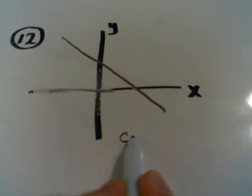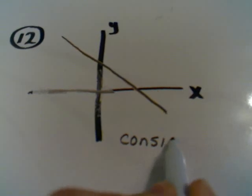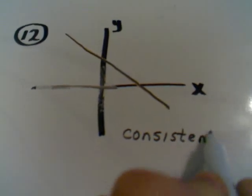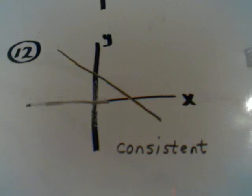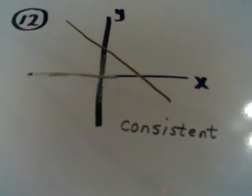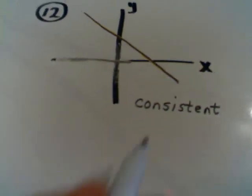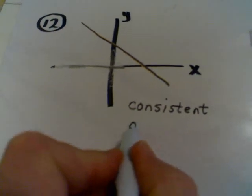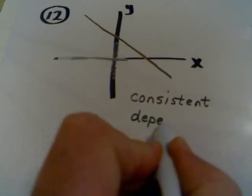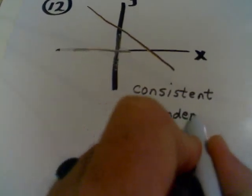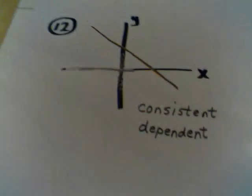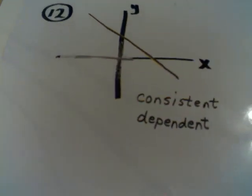This is a consistent system. Remember, consistent means that you have at least one point of intersection. Well, this one has infinitely many points. And this is also sometimes called a dependent system.